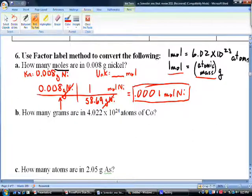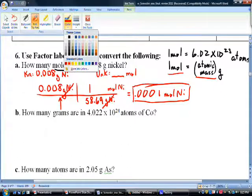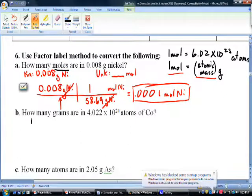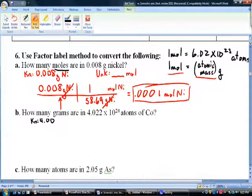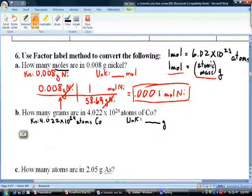Next problem. The thing we know is that we have 4.022 times 10²⁴ atoms of cobalt. We can just say atoms cobalt. The thing we want to find out is how many grams is this?